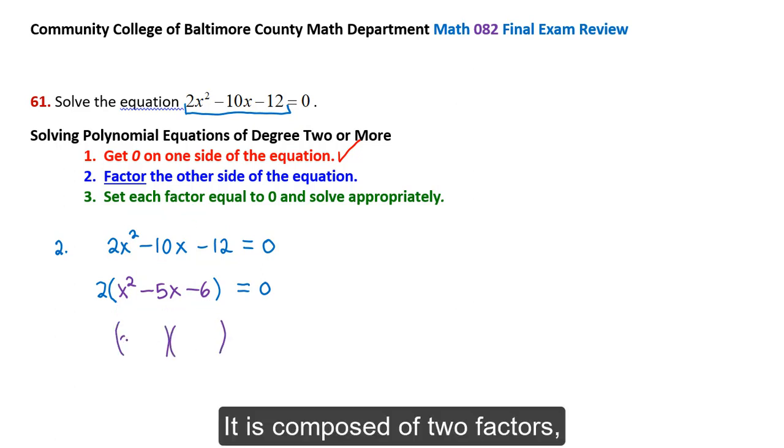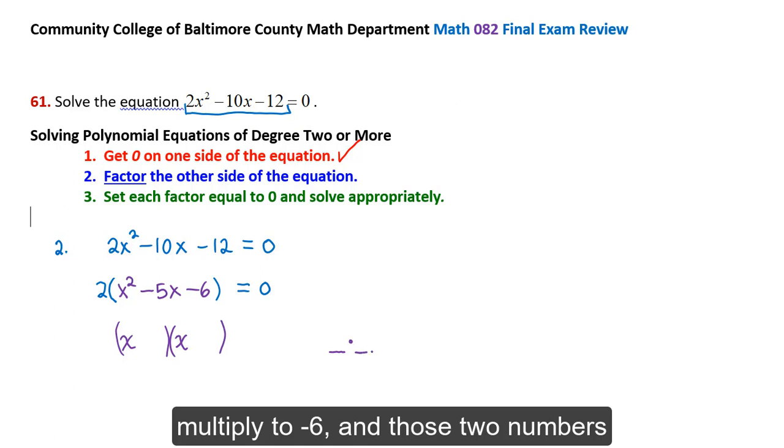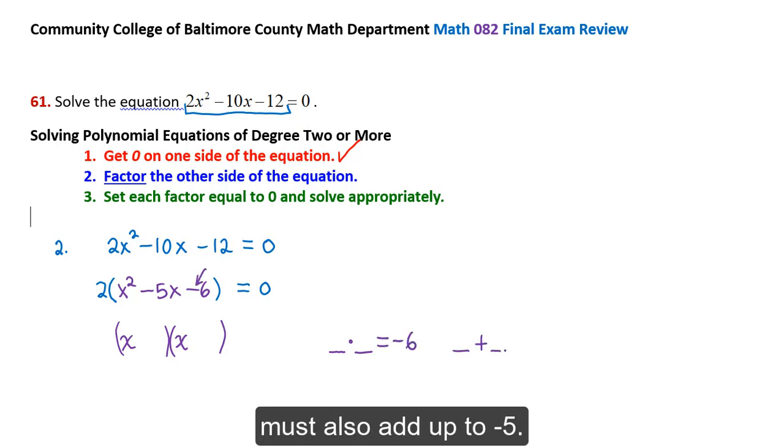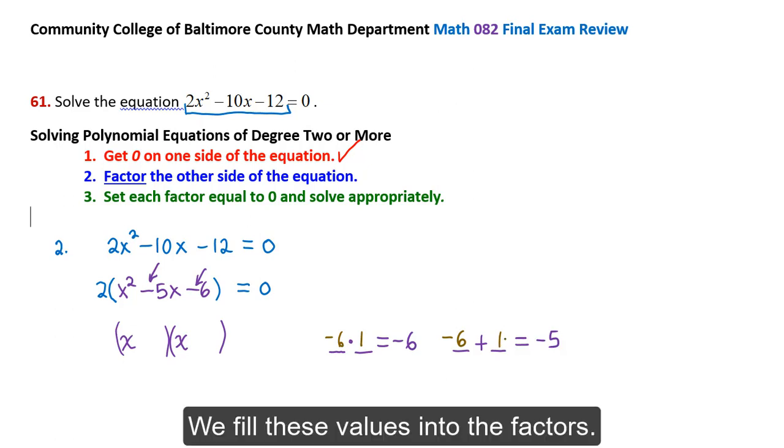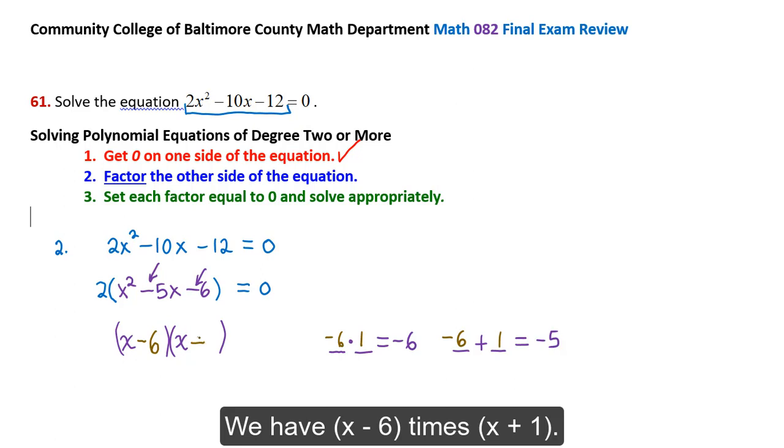We continue factoring this quadratic here. It is composed of two factors, each of which start with x. And we must find two numbers that multiply to negative 6. And those two numbers must also add up to negative 5. Those two numbers are negative 6 and positive 1, which multiply to negative 6 and which also add up to negative 5.